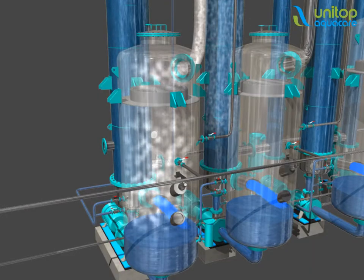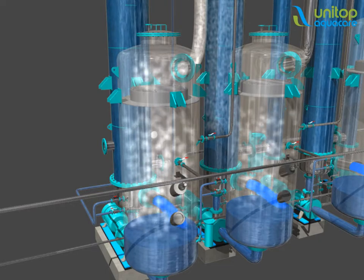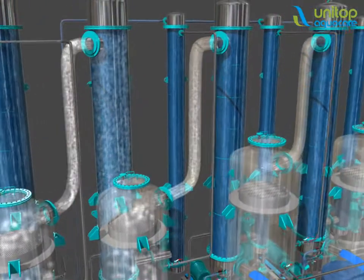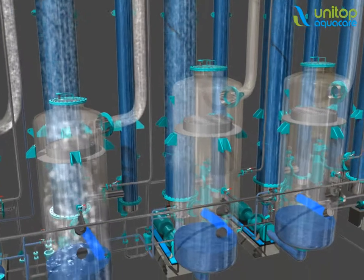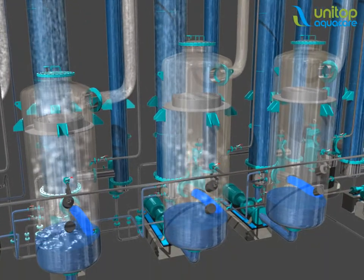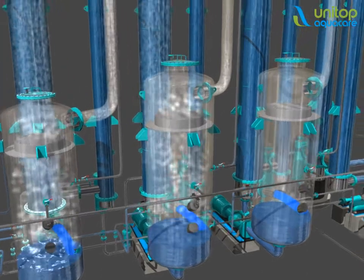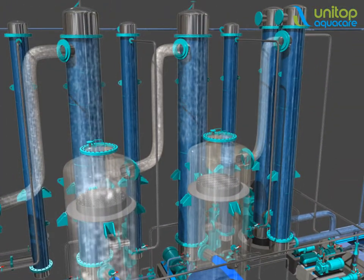In the first flash vessel, some water from the RO reject gets flashed and is converted into vapors. These vapors are carried into the next heater's shell side as a heating media by vacuum. Again, the RO reject passes through the tube, and thus there is heat transfer between shell side vapors and tube side liquid.